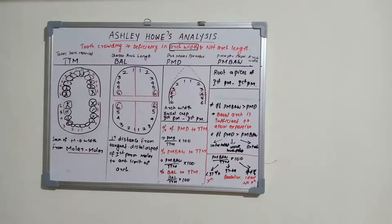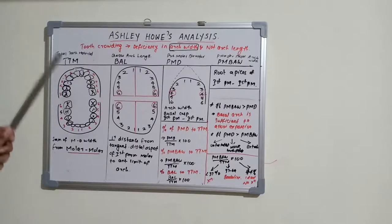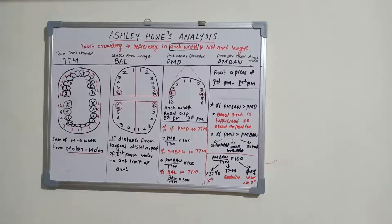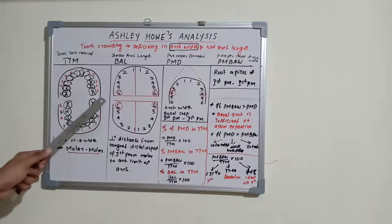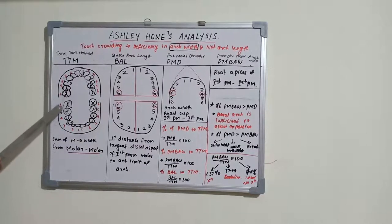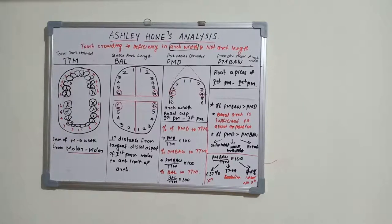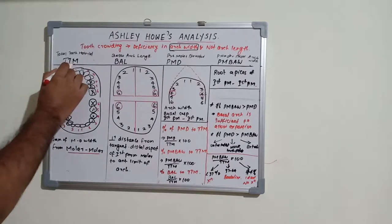In this analysis, there are four parameters, and the analysis is exclusively based on these four parameters. The first parameter is total tooth material, which is the sum of the mesiodistal widths of all teeth from first molar to first molar.